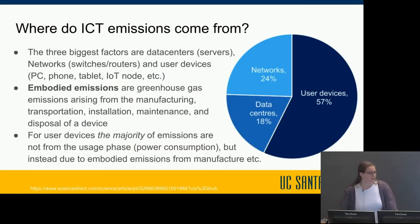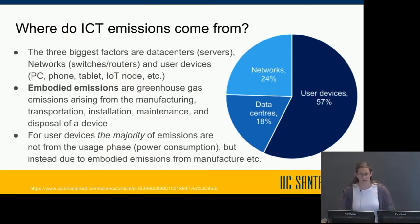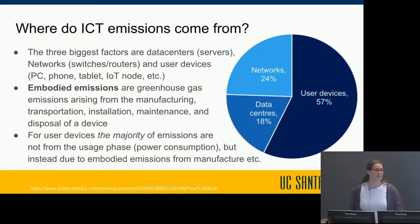The biggest ICT emission contributors are data centers, networks like switches and routers, and user devices like personal computers, phones, tablets, and IoT nodes. A 2020 study estimates that user devices account for the majority of ICT emissions at 57%. For user devices, the majority of emissions are not actually from the usage phase — not from power used to charge your phone or laptop — but due to something called embodied emissions.